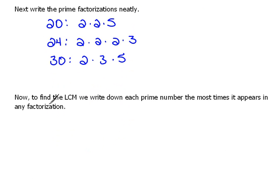Now, to find the LCM, we write down each prime number the most times it appears in any factorization. Do you notice that in our prime factorizations up here, we have only 2s, 3s, and 5s, no other numbers. So I'm going to go ahead and write that down: 2s, 3s, and 5s.